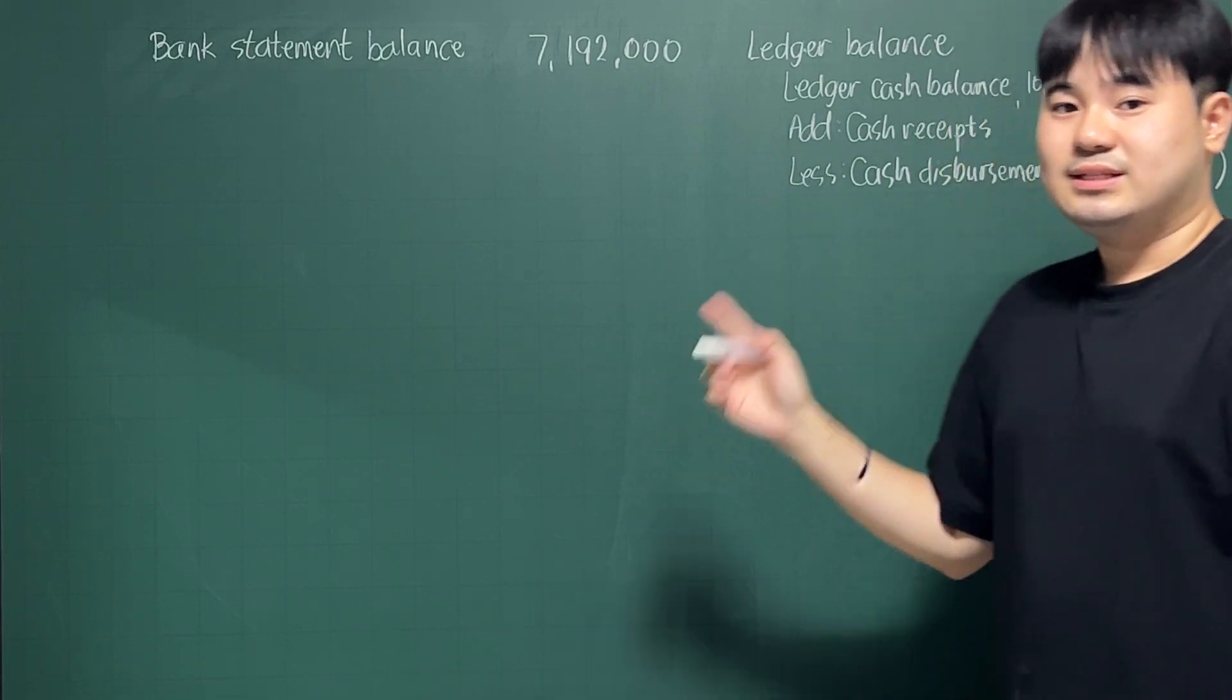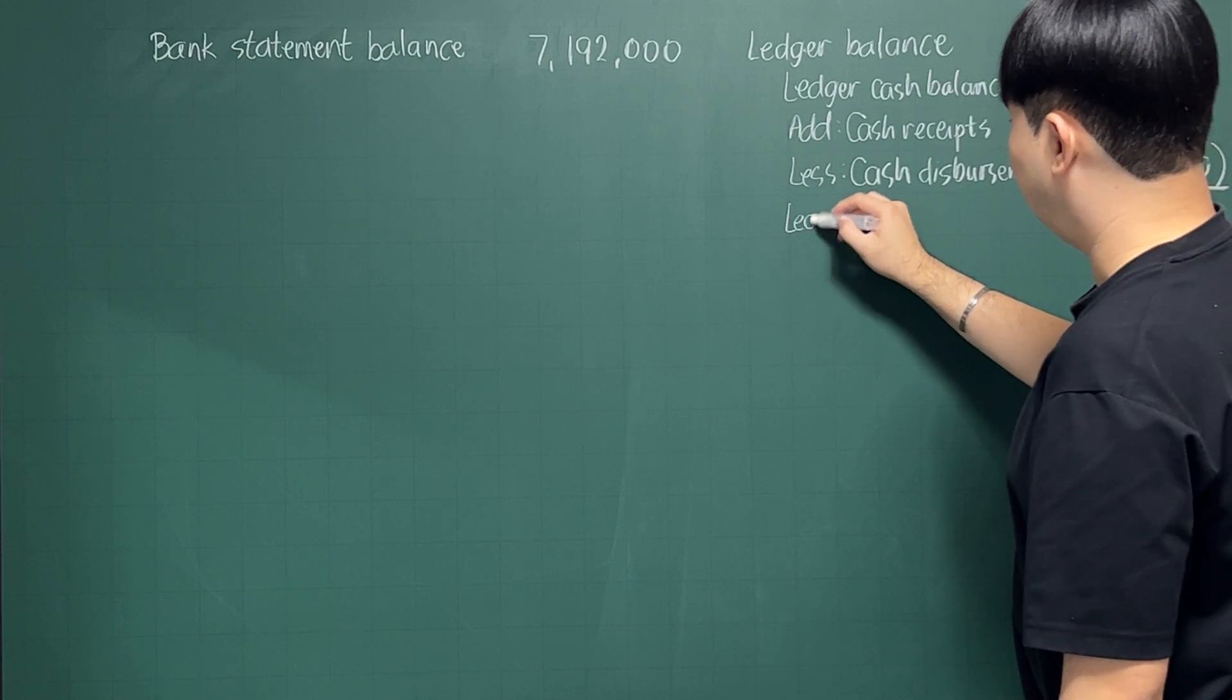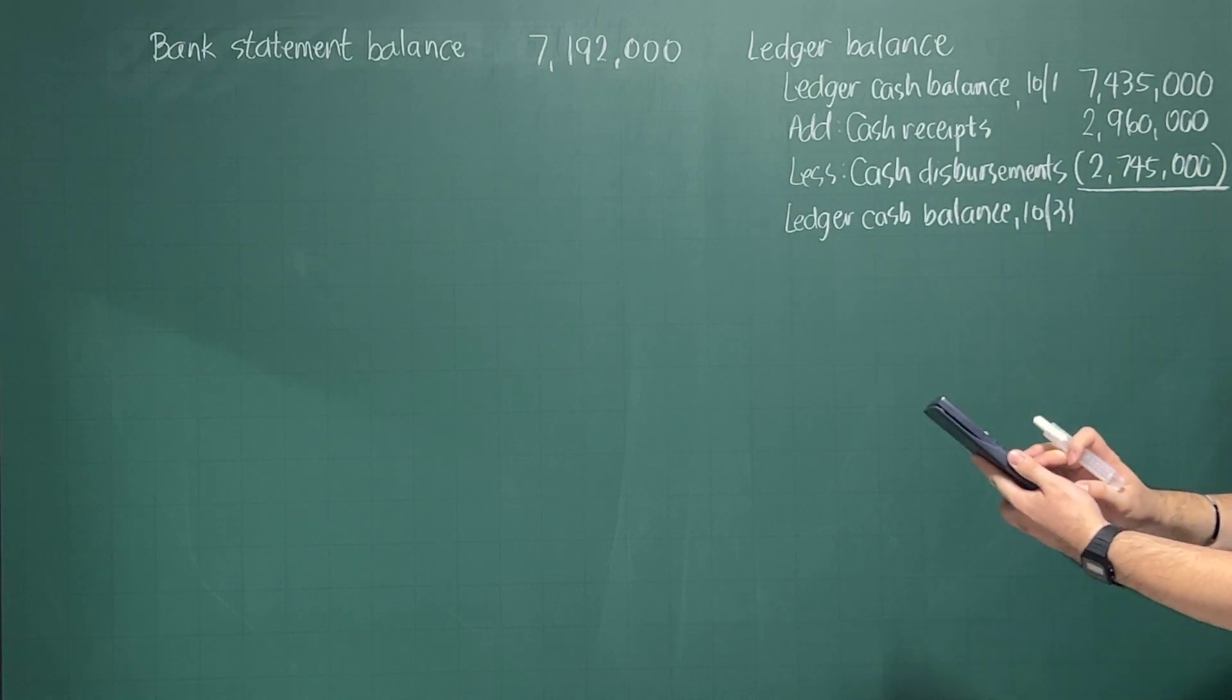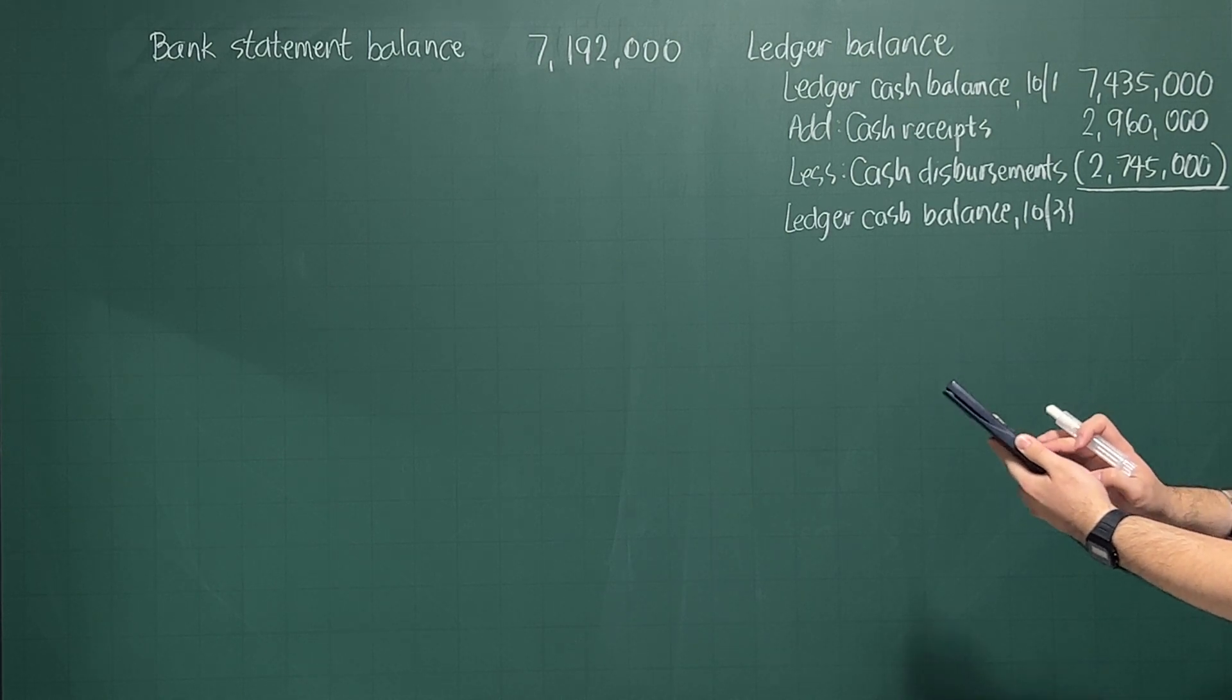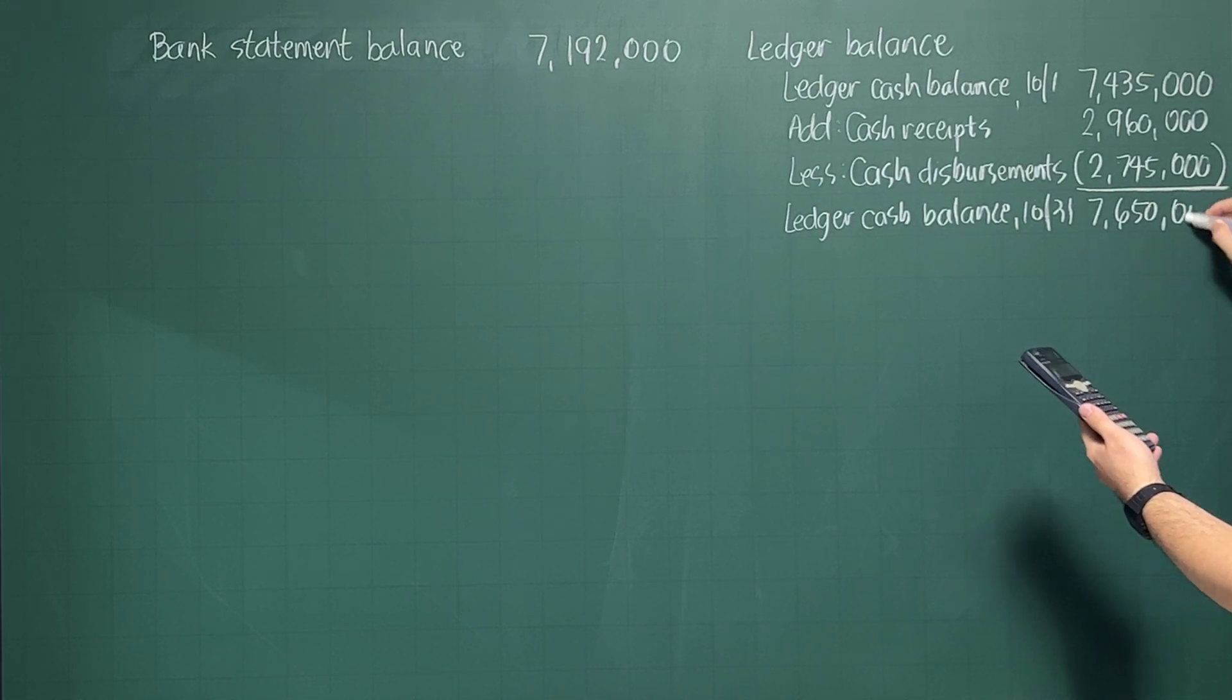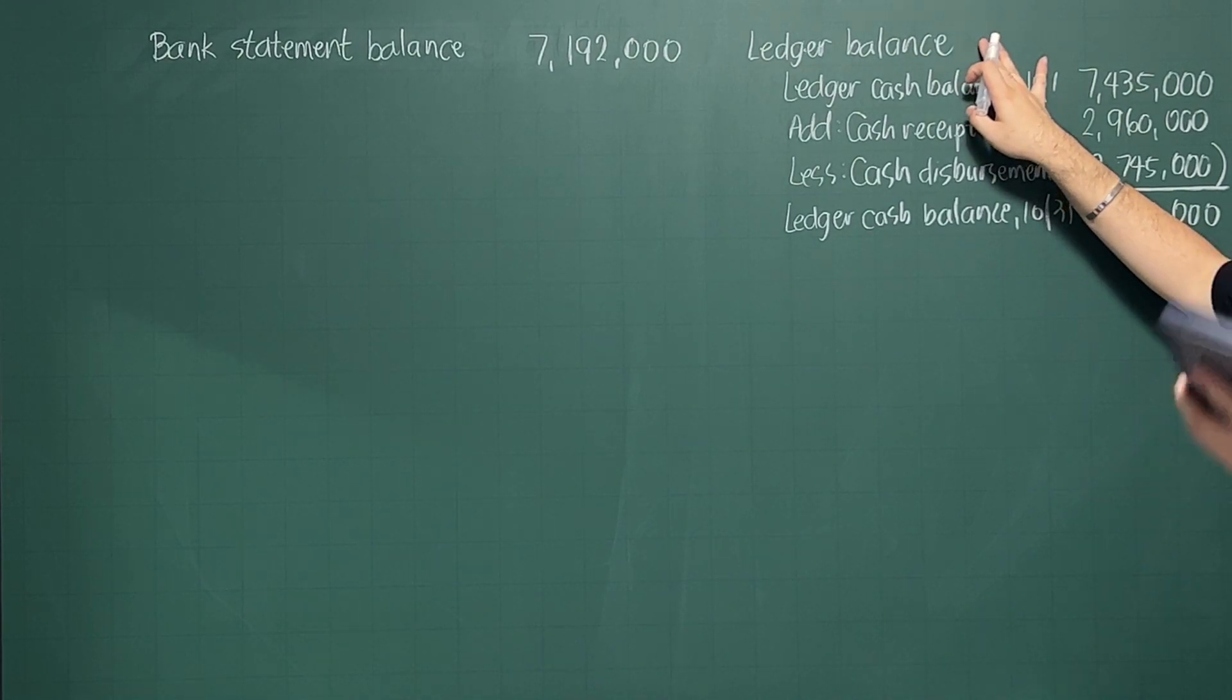Before we continue with the analysis, let's get now the ledger balance as at October 31. So that is $7,435,000 plus $2,960,000 minus $2,745,000, which gives us as ending balance, as far as ledger is concerned, of $7,650,000. We're just basically starting. Because this is your unadjusted bank statement balance, and this is actually your unadjusted ledger balance. So this is just the starting point.